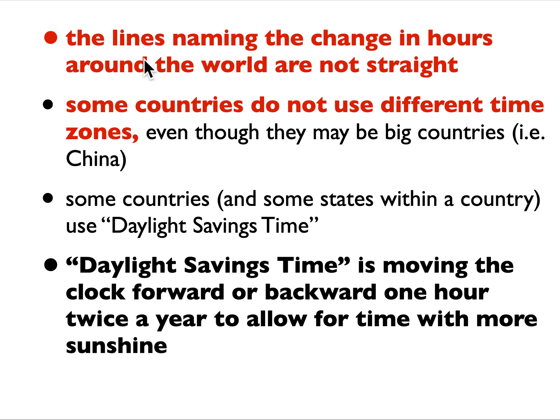So the lines marking the change in hours around the world are not straight — I already showed you how they're squiggly because it's based on borders of the country or states. Some states and countries use daylight savings time, though most do not. Few do, like the United States. But even in the United States, there are two states that do not use daylight savings time. The whole point was to save some time on the clock to give us more light in the summertime.